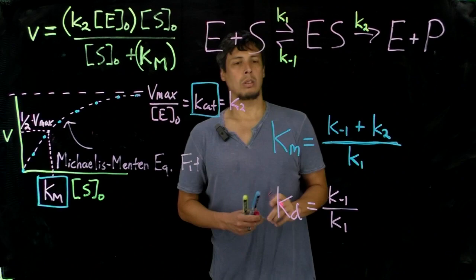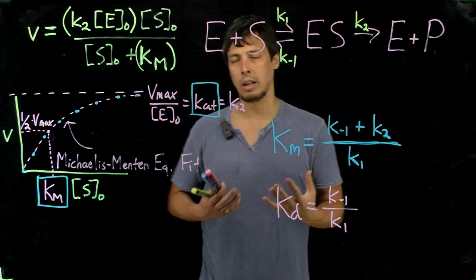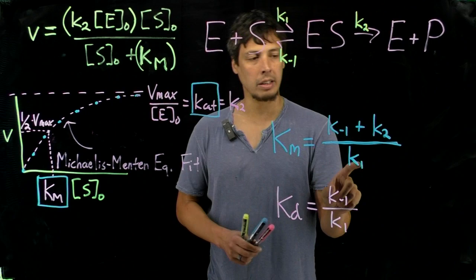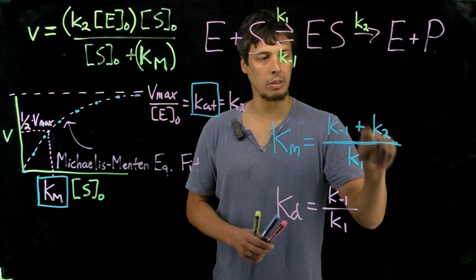So, very often, Km is described as a way to look at binding affinity of substrate for the enzyme substrate complex. However, Kd is the true measure for this affinity, not Km. And that's, again, because even though K minus 1 and K1 are in the proper place...